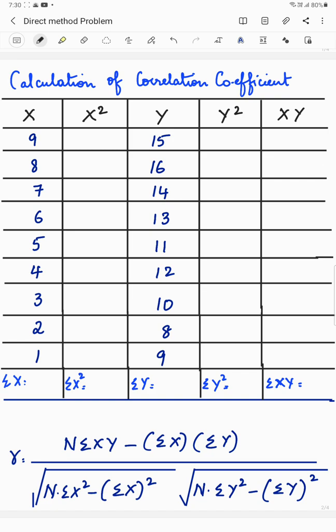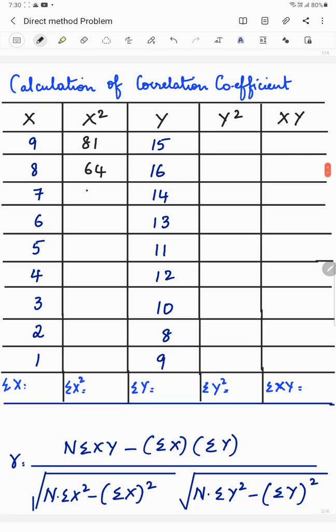You can see x square is what? 9 square, 9 9s are 81. 8 8s are 64. 7 7s are 49, then 6 6s are 36. Then 5 5s are 25, 16, 9, 4, 4, and 1.